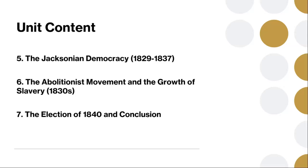We will also cover the abolitionist movement and the growth of slavery in the 1830s. By the 1830s, the issue of slavery had become increasingly contentious. The abolitionist movement gained momentum with figures like William Lloyd Garrison and Frederick Douglass, who advocated for the immediate end of slavery. Simultaneously, the South became more reliant on slave labor, deepening the divide between North and South.